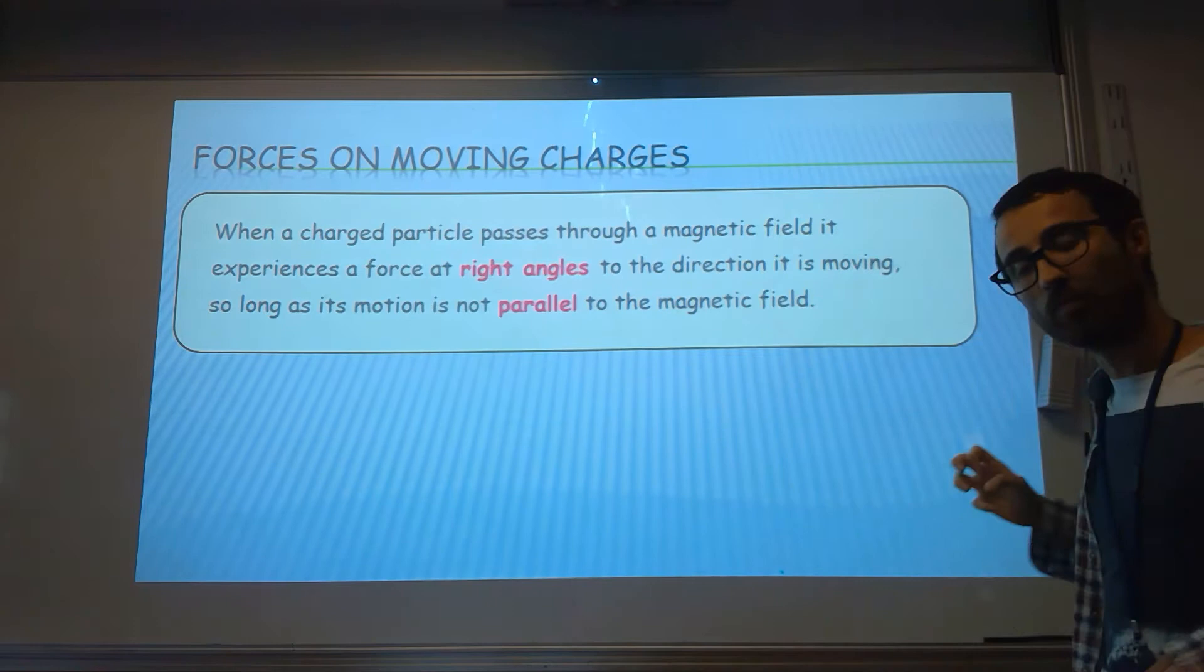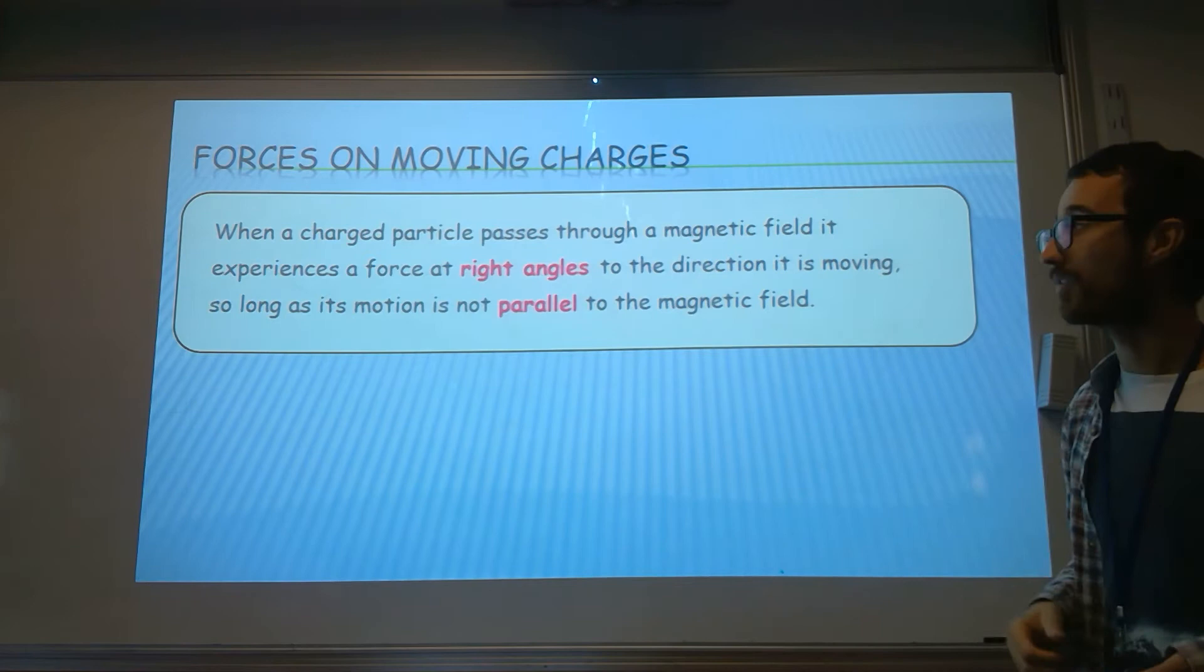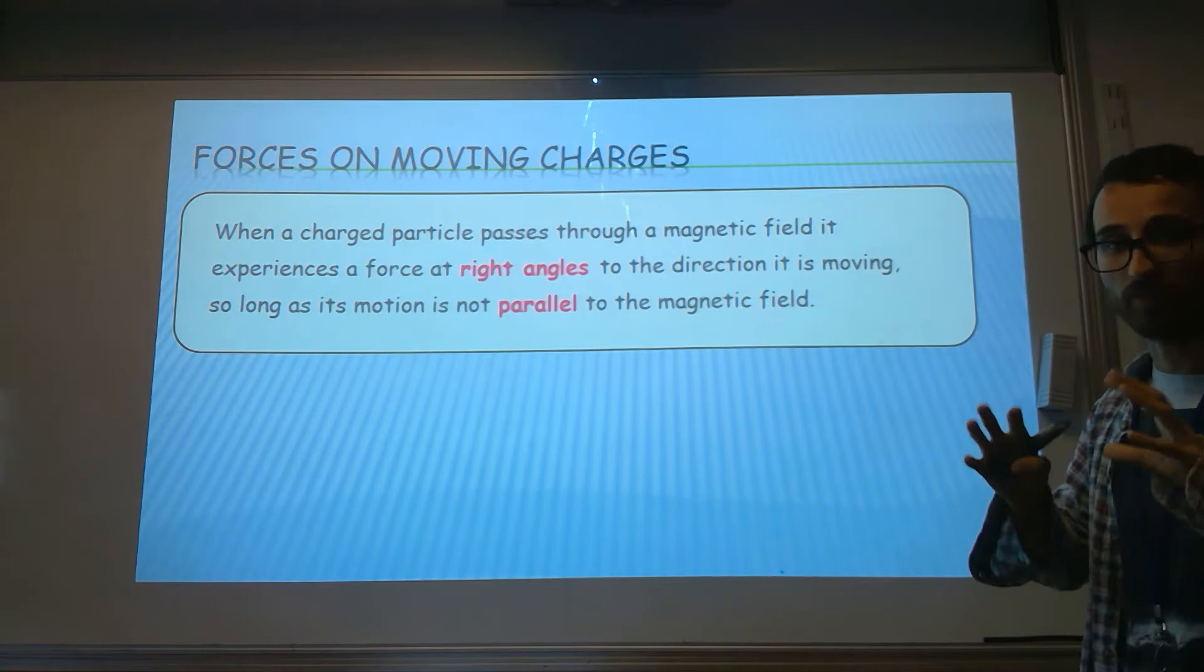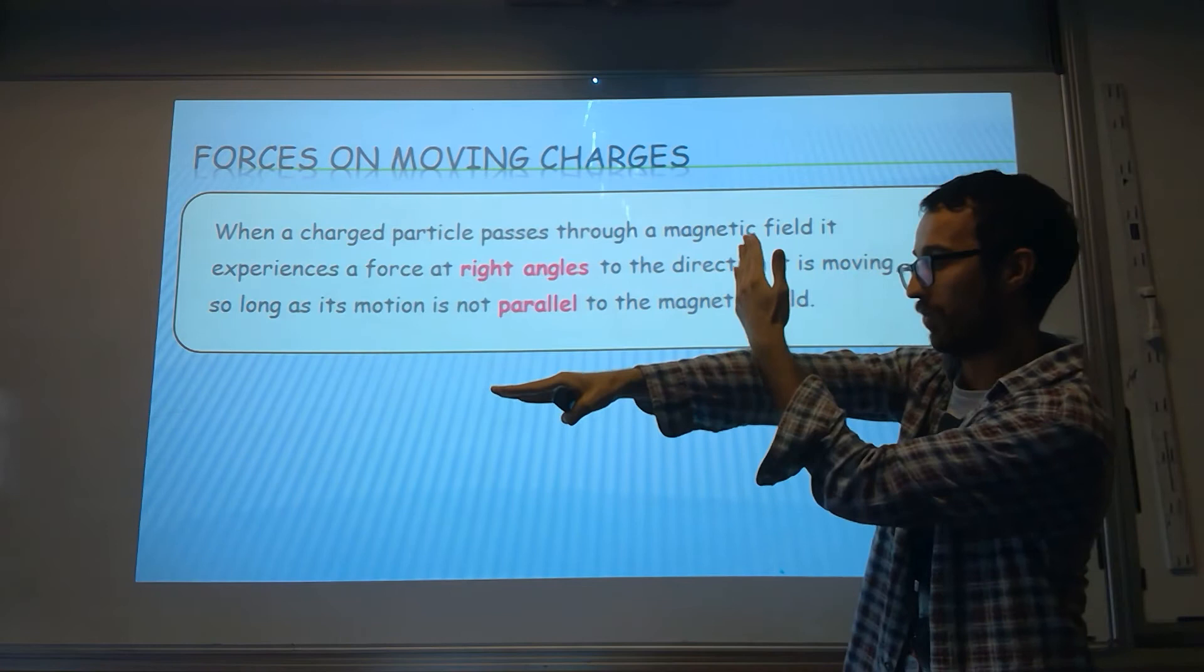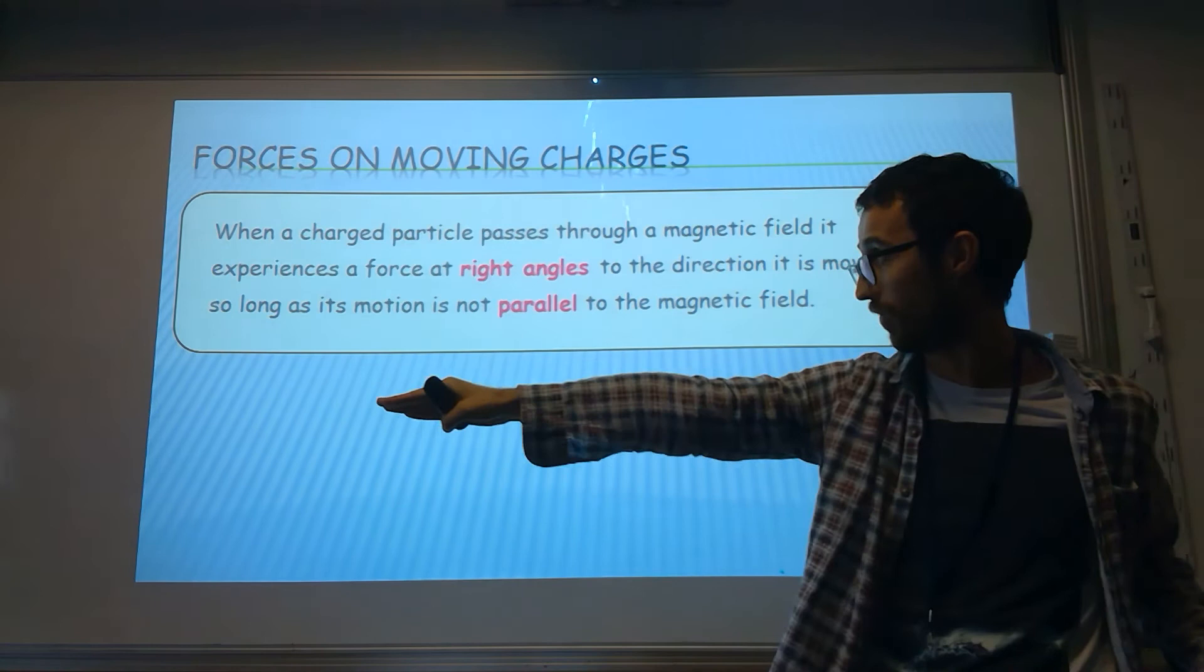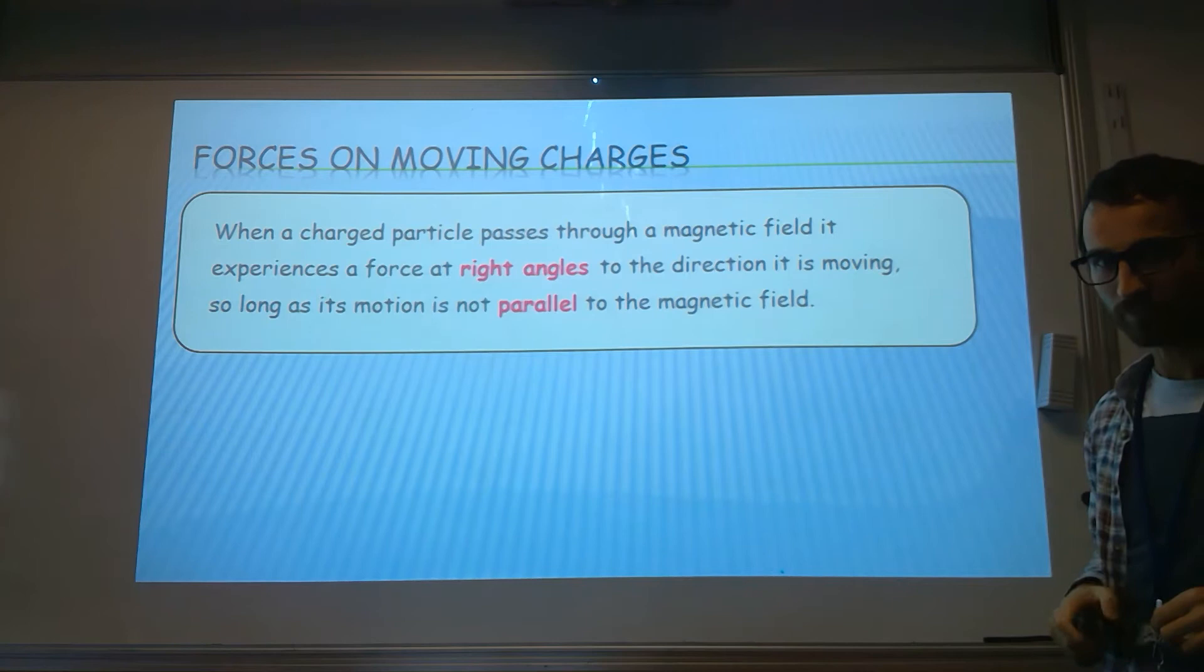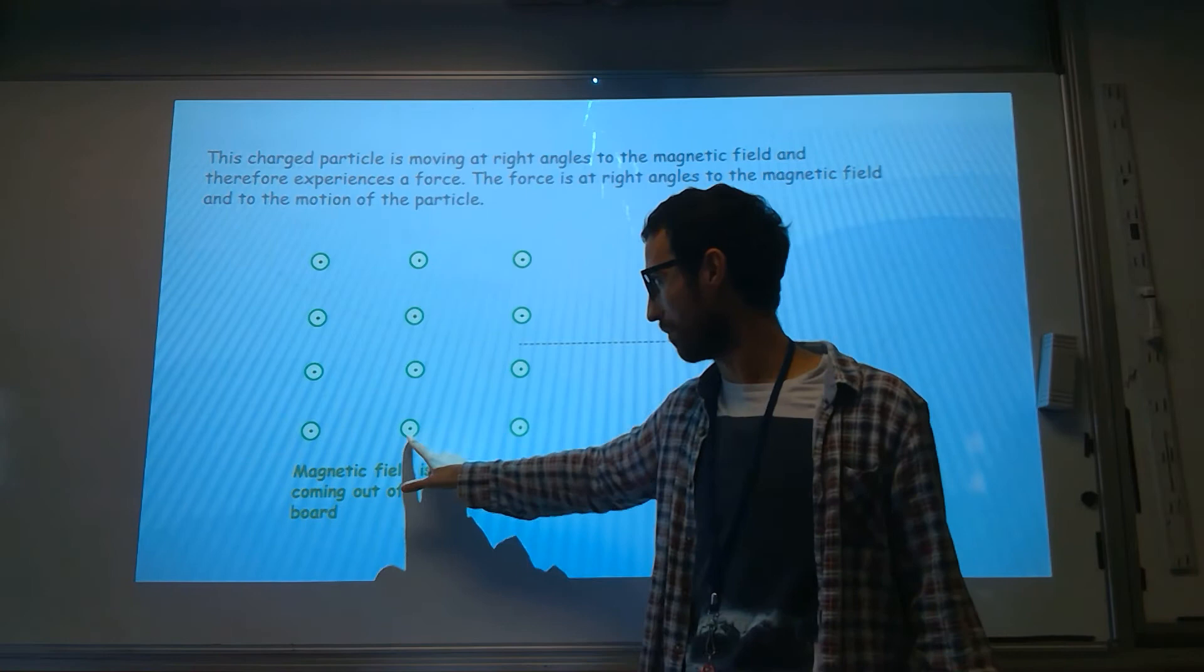Now we've talked about magnetic fields. Let's think about what happens if we have a charged particle moving into a magnetic field. If you've ever seen the northern lights, this is all to do with this. When a charged particle passes through a magnetic field, it will experience a force at right angles to the direction it's moving. So if it's moving that way, we can experience force upwards, downwards, that way, or towards you. But it's got to be at right angles to the direction it's moving in. And we'll see what that means about parallel magnetic fields in a second.